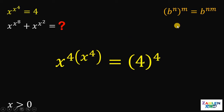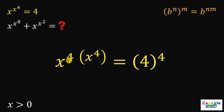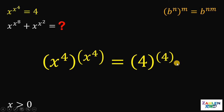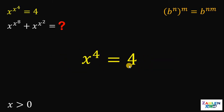Now let's reverse: if we have a multiplication n times m, this can be written as b raised to n raised to the power of m. Therefore, x raised to 4 times x raised to the fourth power can be written as x raised to the fourth power, raised to x raised to the fourth power. On the right-hand side, this is just 4 raised to the power of 4. Therefore, we can say that x raised to the fourth power is just 4.